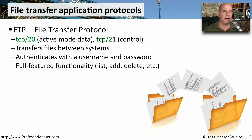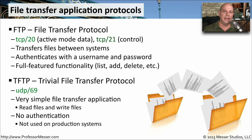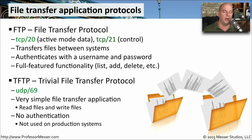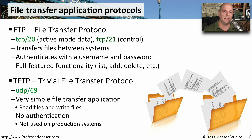Something that doesn't have quite so many bells and whistles is the Trivial File Transfer Protocol. This uses UDP port 69, and it is a very simple file transfer protocol that's used to read information from a server and write information to a server. There's no authentication, so no username and password, and you don't really have access to a lot of file system functions. It's really designed just to transfer data from one device to another.